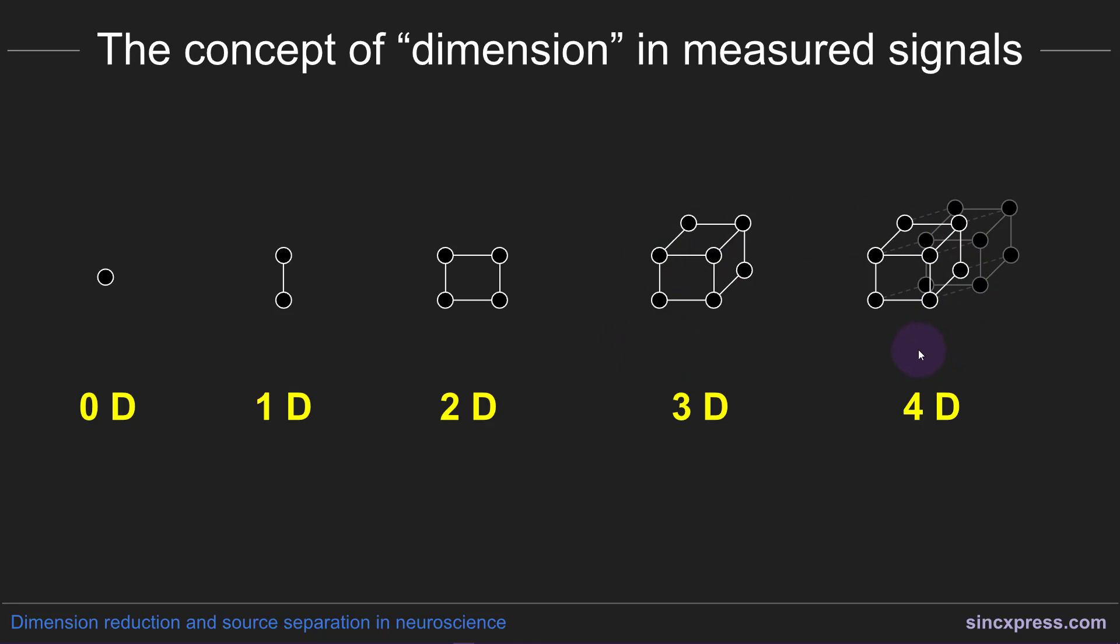You can conceptualize four dimensions in one of two ways. One, you can think about a three-dimensional object like a cube traveling over time, so then time is the fourth dimension. Or you can think about the fourth dimension being represented by a color, so if there were colors all around this cube, then the color would correspond to the fourth dimension.